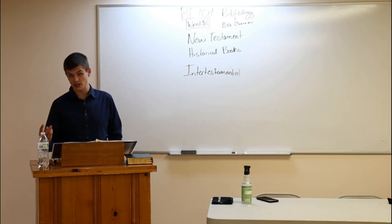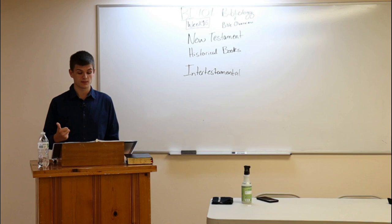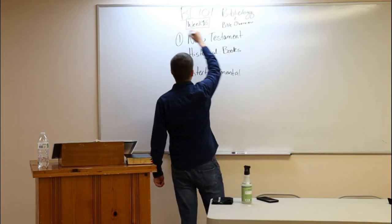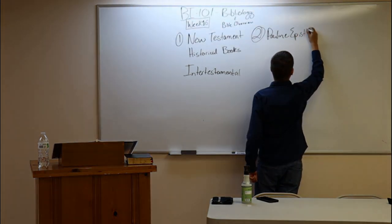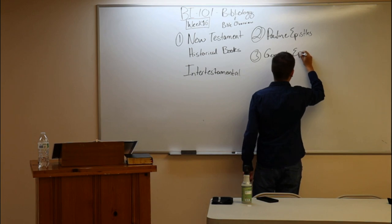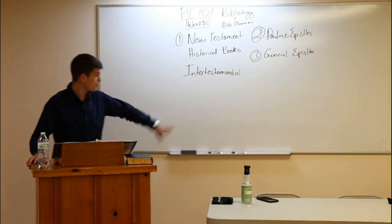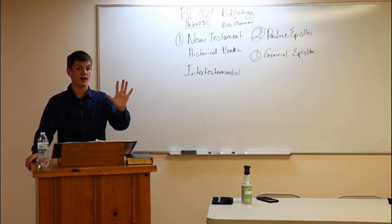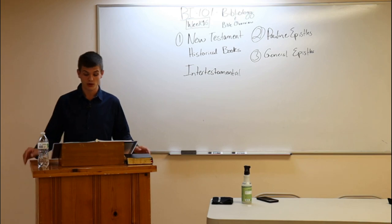If you divide the New Testament into three sections—just as we had four for the Old Testament—we divide it into: the New Testament historical books, the Pauline epistles, and the general epistles. This could be broken down more comprehensively, but for this class we'll use these broader categories. If you broke the New Testament down this way, the New Testament historical books make up 60% of the New Testament. Only five books out of 27 make up that 60%, so we must give this portion of our Bible its due study.